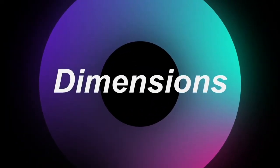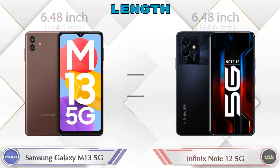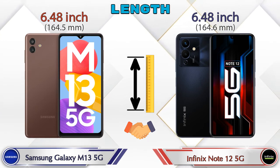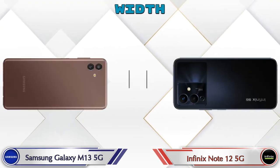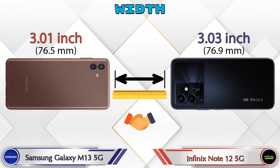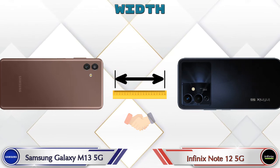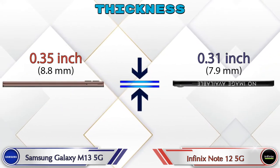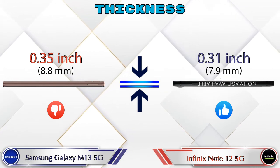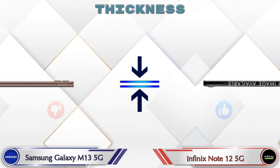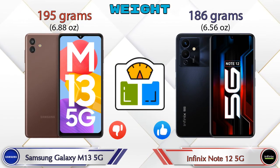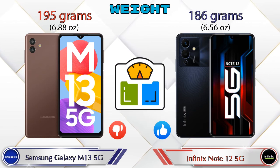Now let's check the dimensions. The length of both phones is the same at 6.48 inches. Width: Galaxy M13 5G is 3.01 inches and Note 12 5G is 3.03 inches, which are almost the same. Thickness: Galaxy M13 5G is 0.35 inches and Note 12 5G is 0.31 inches. Weight: Galaxy M13 5G is 195 grams and Note 12 5G is 186 grams.